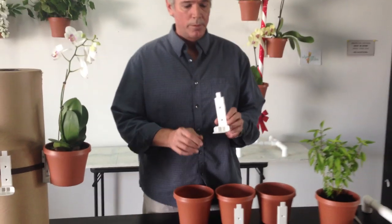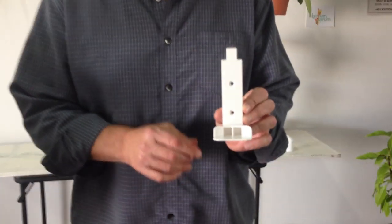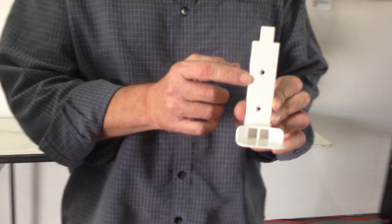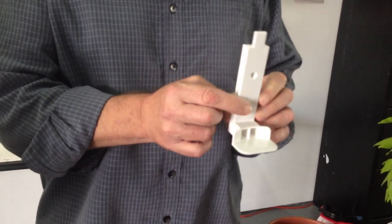Here is the hanger. It's made out of sturdy plastic. You will notice two holes on the front. Those holes are meant for a nail or for a screw.